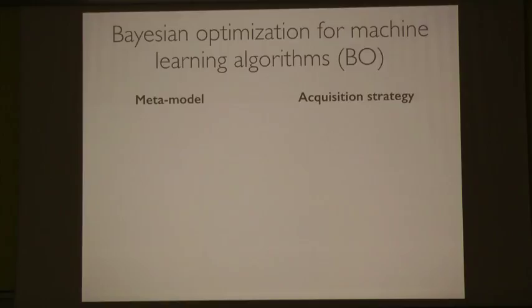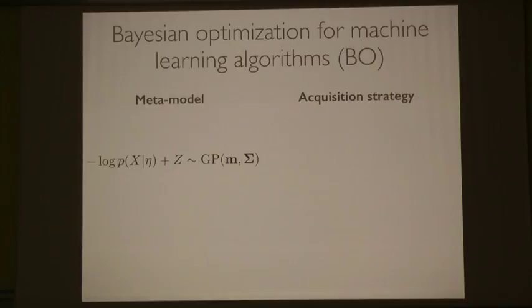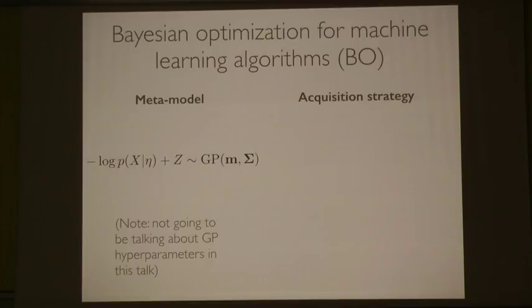Usually the meta-model is a Gaussian process because of nice properties it holds. We can place a Gaussian process prior on some non-negative function with normalization. Note that there are often hyperparameters related to the kernel itself — I'm not going to be talking about those, but I am talking about the hyperparameters to the machine learning algorithm that lives inside here.